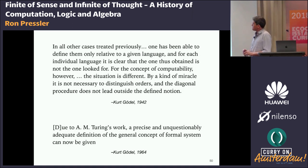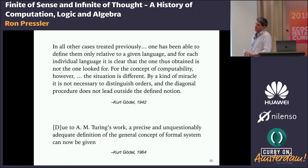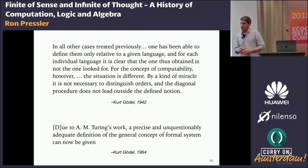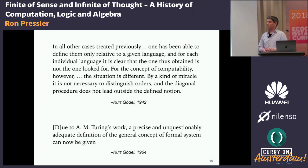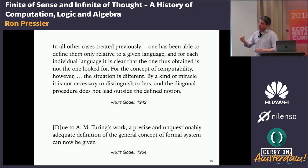An audience member asks whether there are indications of steps beyond Turing's analysis, or is this it? The speaker says there are still many questions about formal systems and computation. There are two branches in theoretical computer science: complexity theory that directly stems from Turing's work, and programming language theory (theory B) that still studies the design of formal systems. We know that formal is mechanical and can be performed by a machine — that we know.